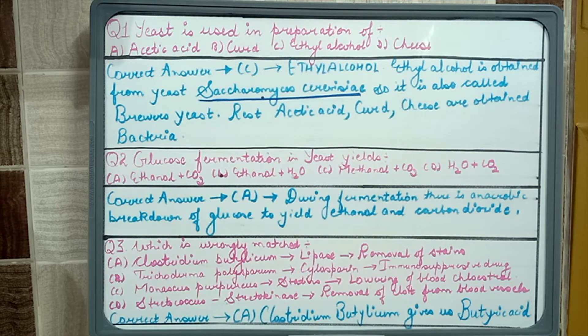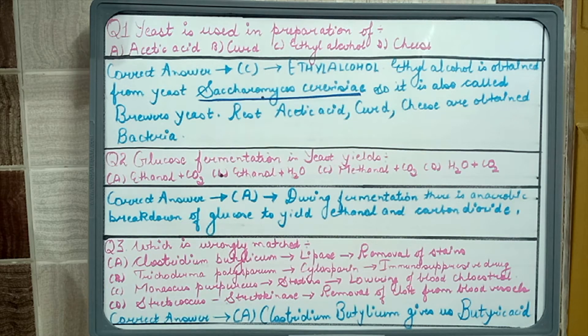Clostridium butylicum does not produce lipase but it gives us butyric acid. These three are bioactive molecules. Trichoderma polysporum gives cyclosporin which is an immunosuppressive drug used in organ transplant patients. Monascus purpureus gives us statins which help in lowering blood cholesterol and Streptococcus gives us streptokinase which helps in removal of clot from blood vessel.